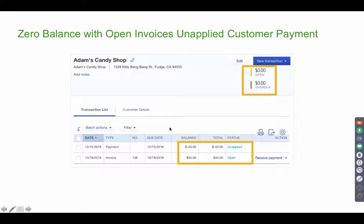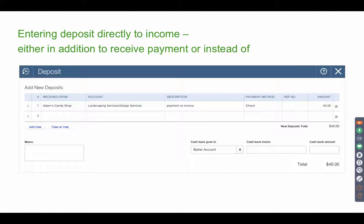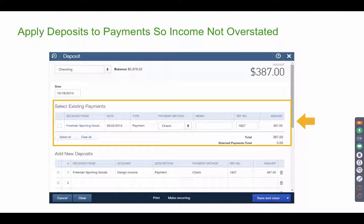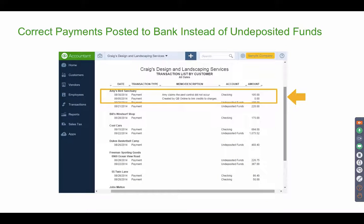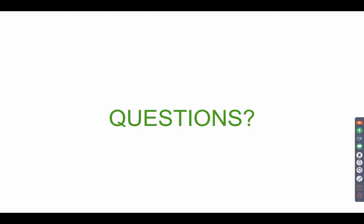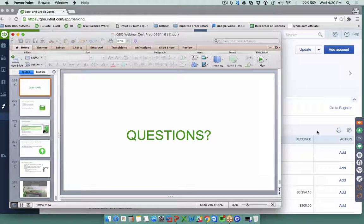In the Customer Center you may find a customer with zero balance but an open invoice and an open payment. All you have to do is click on the payment and check the checkbox for the invoice to apply it. Those are basically all the sections — that pretty much sums it up.